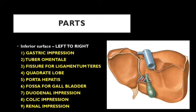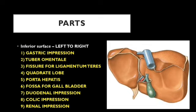Next to the gallbladder fossa are three impressions. Immediately next is the duodenal impression. Below the duodenal impression is the colic impression for the right colic flexure. Just to the right and above is the renal impression for the right kidney. These are the impressions present in the inferior surface of the liver.